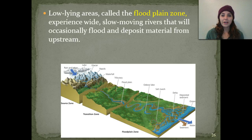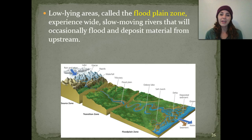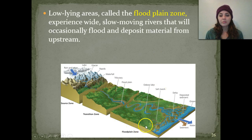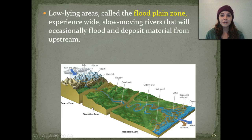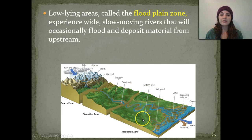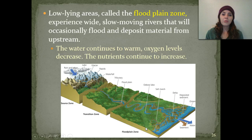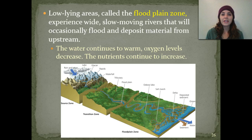Low-lying areas called the floodplain zone experience wide, slow-moving rivers that will occasionally flood and deposit material that had come from upstream. All of the nutrients and sediments collecting through the transition zone get deposited down here in the floodplain zone. The water continues to warm, oxygen levels continue to decrease, and the nutrients continue to increase.